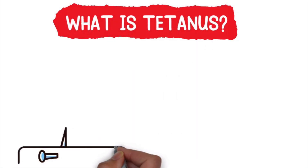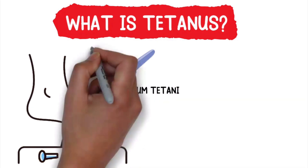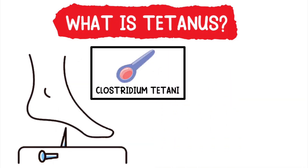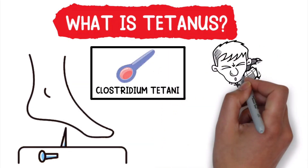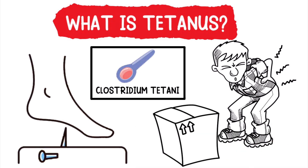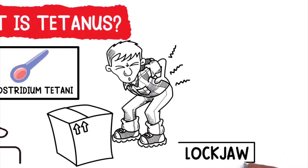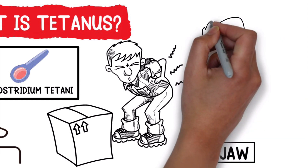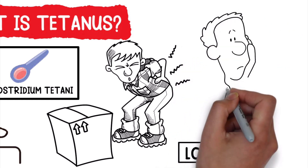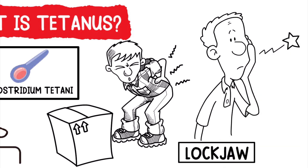What is tetanus? Tetanus is an infection caused by the Clostridium Tetani bacteria that invades the body and produces toxins that result in painful muscle contractions. You may have also heard tetanus referred to as lockjaw, because it often causes the patient's neck and jaw muscles to stiffen, making it difficult to open the mouth or swallow.